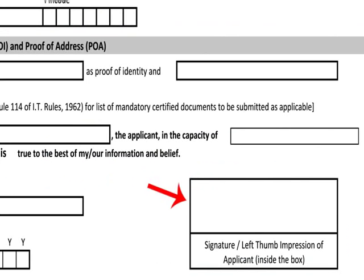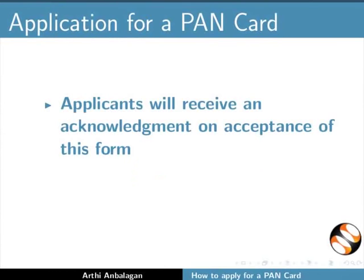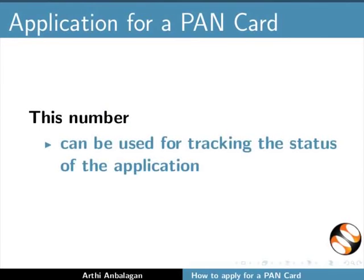The box at the end of the form asks for the applicant's signature or thumbprint. Representative assesses' signature or thumbprint should be given for minors, the deceased, lunatics and the mentally retarded. Applications without signature or thumbprint will be rejected. Applicants will receive an acknowledgement on acceptance of this form, which will contain a unique identification number. This number can be used for tracking the status of the application.